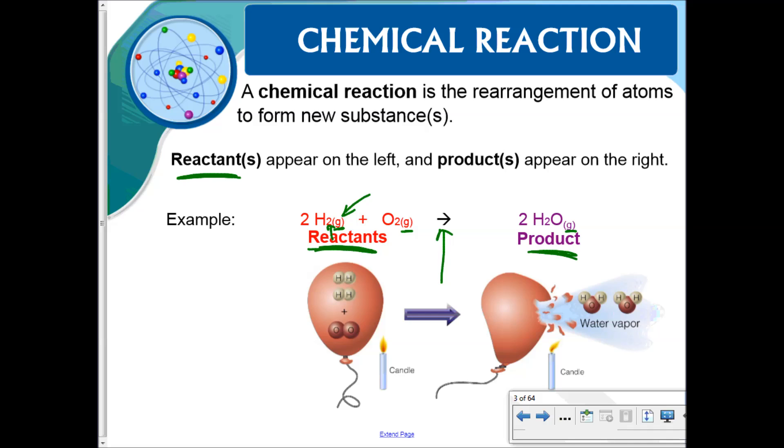Notice that we have this subscript 2, subscript 2 by the hydrogen and oxygen. Just as a reminder, that's because hydrogen and oxygen are diatomic elements which means when they're not in a compound and they're by themselves you always have a subscript of 2.